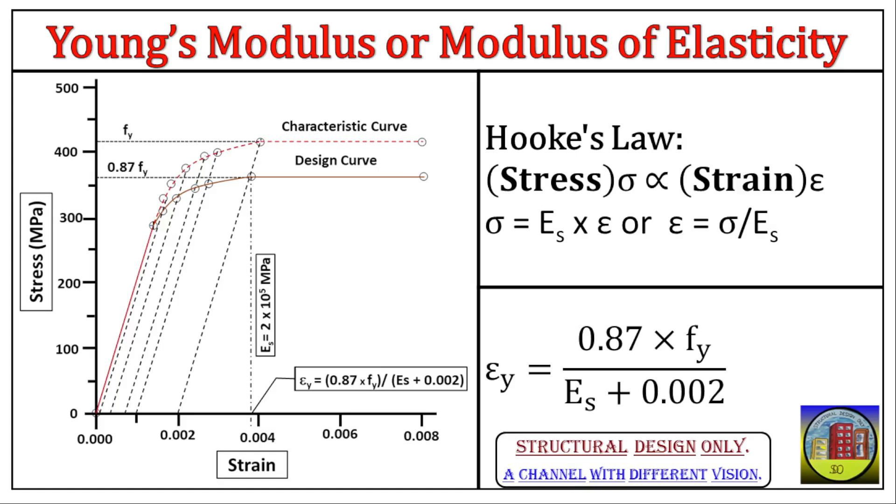ES, Young's modulus - this term tells us how stiff the steel is. A higher Young's modulus indicates the steel is stiffer and stretches less under the same stress. Imagine two steel rods, one with a higher Young's modulus. The stiffer rod, higher Young's modulus, will stretch less than the other rod when pulled with the same force.